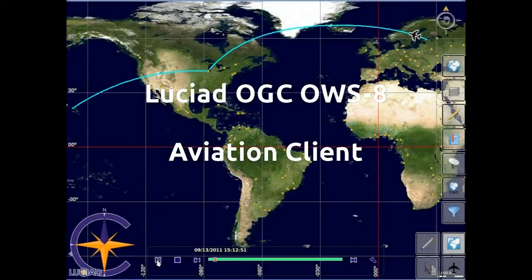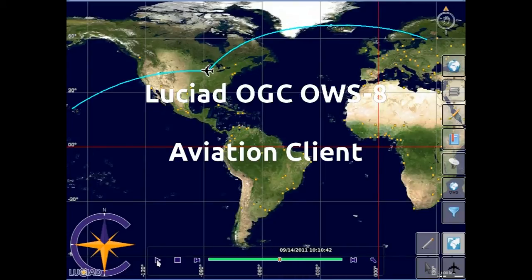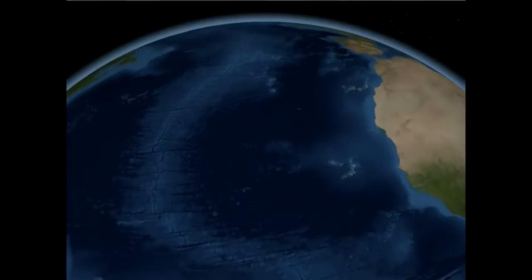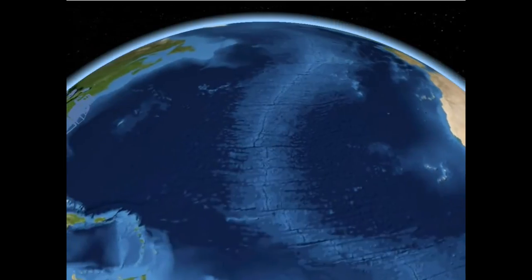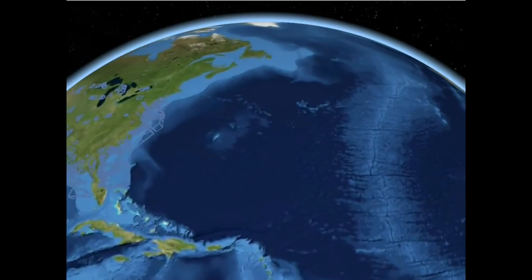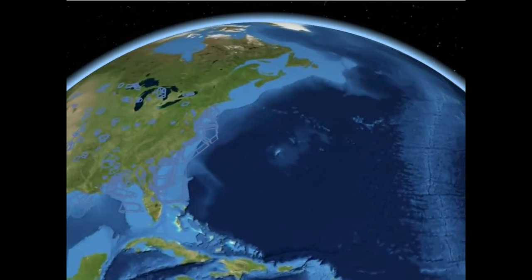This video shows the multifunctional aviation client application built by Lusiad. The application builds on experiences from OWS-6, OWS-7, and the SAA pilot, and uses a number of OGC standards-based components available in the Lusiad map software suite.